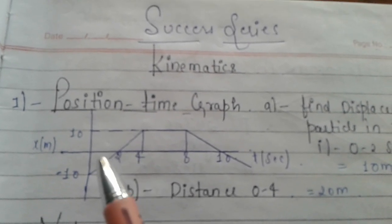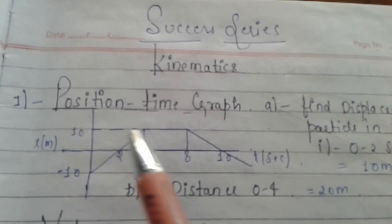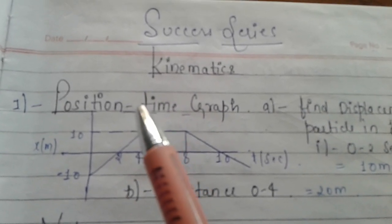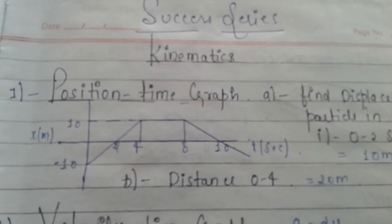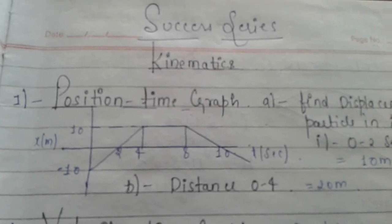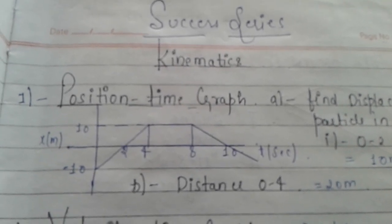For distance from 0 to 4 seconds: the particle travels 10 meters in the first part and 10 meters in the second part, so the total distance of the particle is 20 meters.